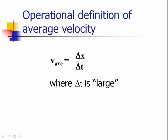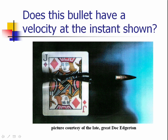Now, there's another type of velocity. If I were to ask you, does this bullet have a velocity at the instant shown in the picture, you might hesitate before answering, worrying that this is a trick question.